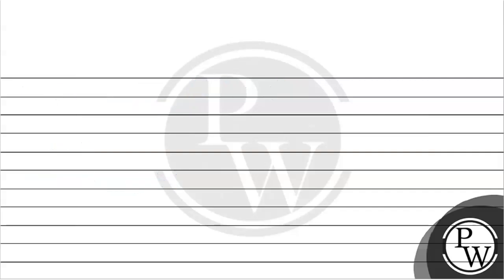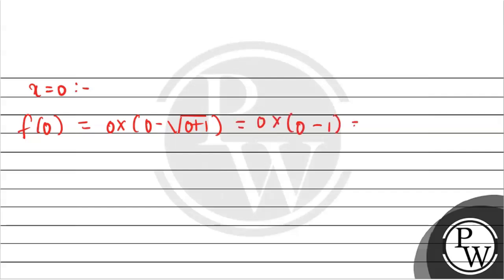Now we go to the solution. First we check continuity at x=0. We substitute: f(0) = 0 times (0 minus √(0+1)) = 0 times (0 minus 1) = 0. Next we will check the left-hand limit and right-hand limit as x approaches 0.